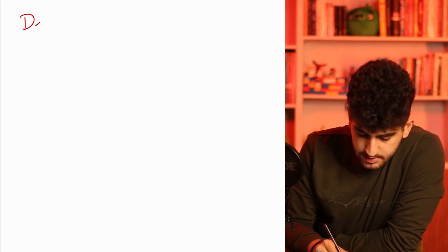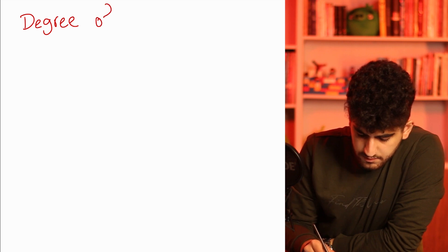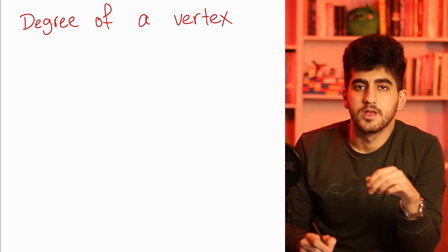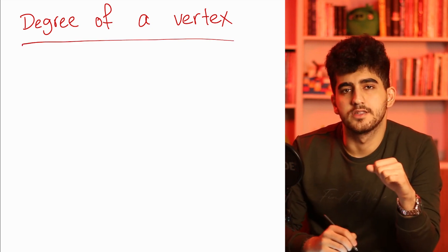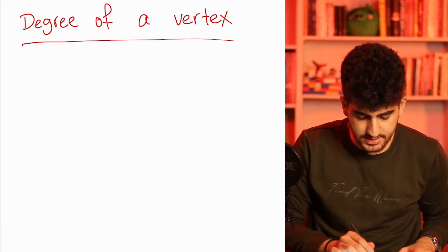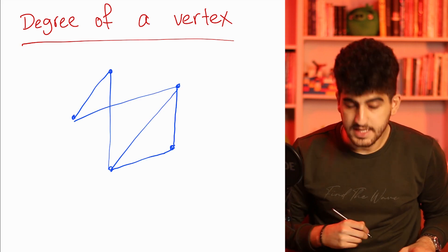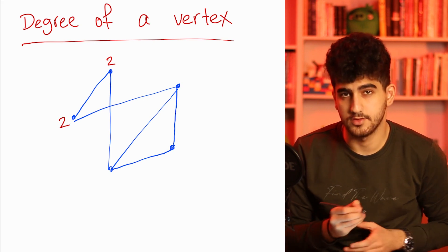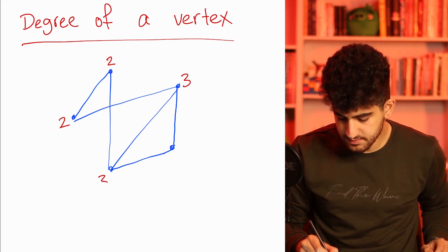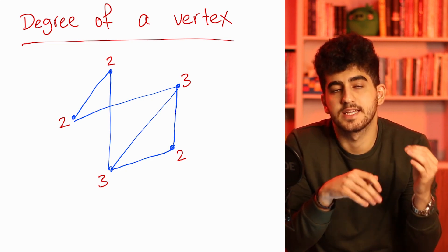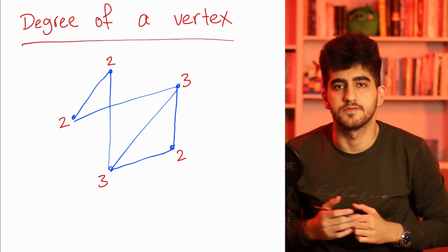The first definition I want to mention is the degree of a vertex. The degree of a vertex is the number of edges connected to that vertex. For instance, if we consider this graph, the degree of this vertex is 2, the degree of this vertex is 2, the degree of this vertex is 3, this one is 3, and this one is 2. So the degree of a vertex is the number of edges connected to that vertex.